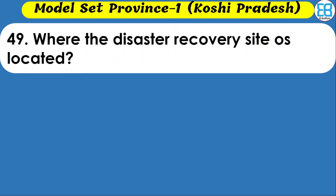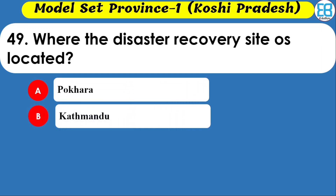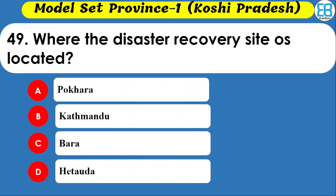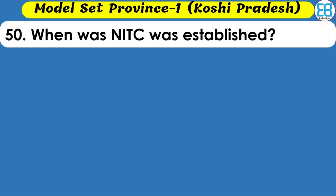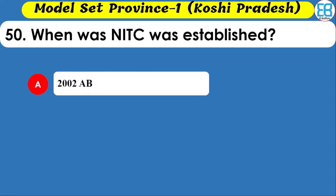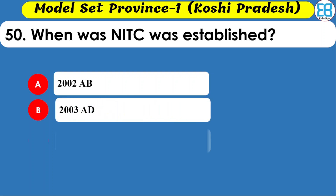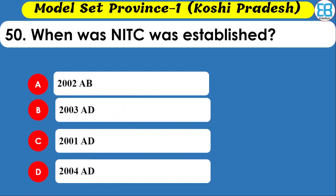Where is the Disaster Recovery Site located? Options are Pokhara, Kathmandu, and Bara. The correct option is Bara. The last question: When was NITC established? Options are 2002 AD, 2003 AD, 2001 AD, and 2004 AD. The correct option is 2001 AD.